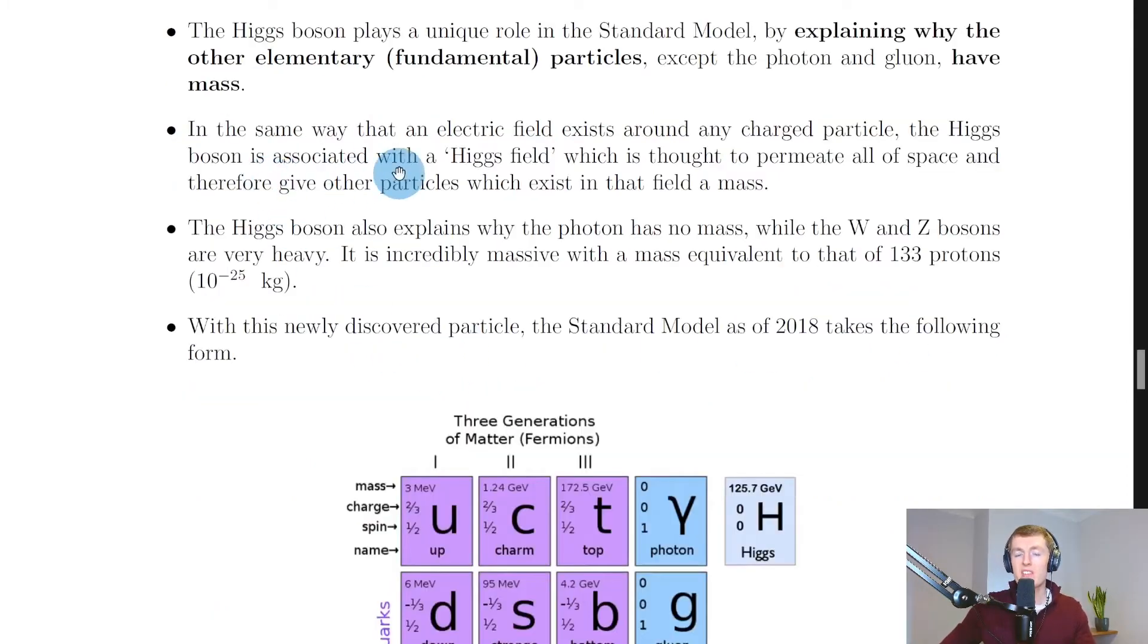In the same way that an electric field exists around any charged particle, the Higgs boson is associated with a Higgs field which is thought to permeate all of space and therefore give other particles which exist in that field a mass. So this Higgs field is thought to be all around us and is thought to be what provides particles with their mass.